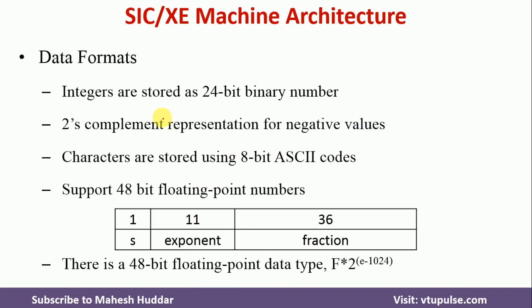Coming back to instruction and data formats: the data formats are almost similar in SIC-XE. For integers, we have a 24-bit binary number. Negative numbers are stored using two's complement representation. Each character is stored using 8-bit ASCII codes. The only change with respect to SIC is that SIC does not support floating point numbers, but SIC-XE supports them, and the size of a floating point number is 48 bits.